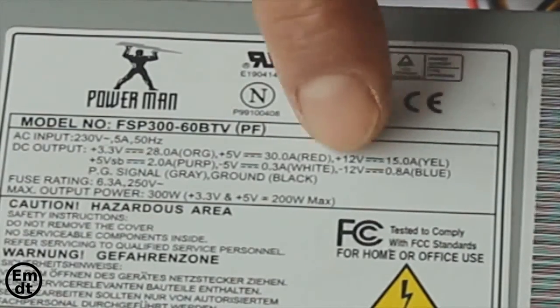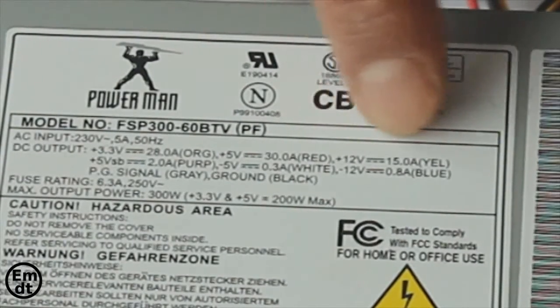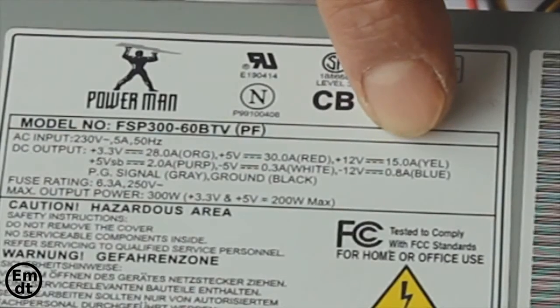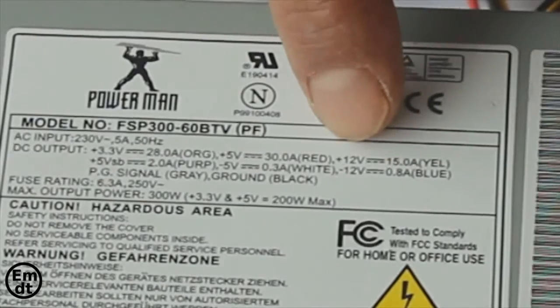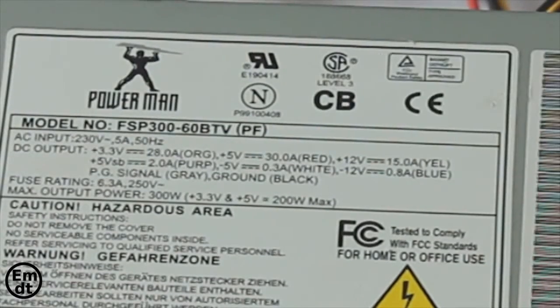If we need 12V, the maximum intensity or current would be 15A. So 12 multiplied by 15 is 180W of power in the yellow color cables.